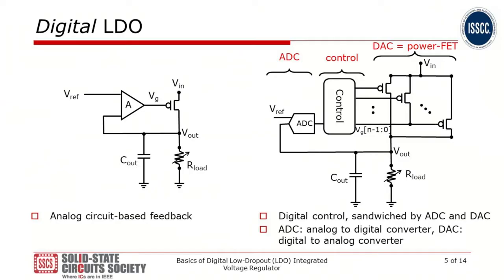However, this feedback loop is not infinite bandwidth. Therefore, when load current changes too fast, the feedback loop becomes ineffective. To support such a case, analog LDO employs an output capacitor. On the right side is the typical architecture of the digital LDO. The key idea is to replace the analog amplifier in analog LDO with an ADC and digital controller circuit, and the DAC which is essentially a power transistor array.